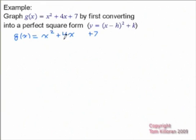And then we're just going to complete the square. Half of 4 is 2, positive 2, and if we square that we're going to add 4.